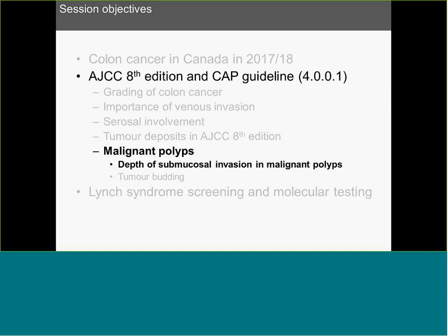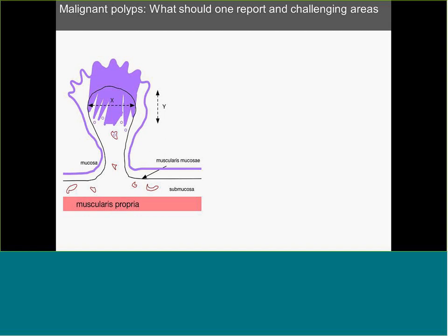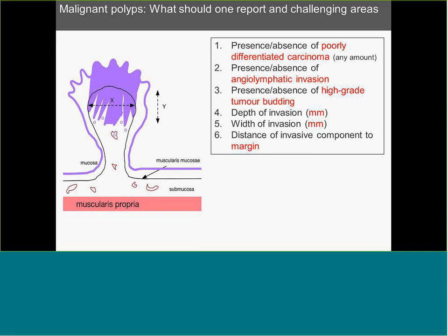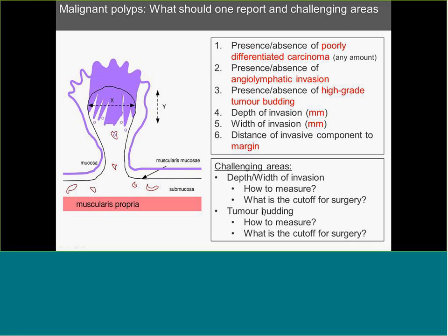Moving on to malignant polyps. In 2018, what one should report includes six things: presence or absence of poorly differentiated carcinoma — any amount should go into the report; presence or absence of angiolymphatic invasion; presence or absence of high-grade tumor budding; depth of invasion in millimeters; width of invasion (with a caveat I'll explain); and distance of the invasive component to the margin. The challenging areas are depth and width of invasion — how to measure, what is the cutoff for surgery — and tumor budding, how to measure and what is the cutoff for surgery.